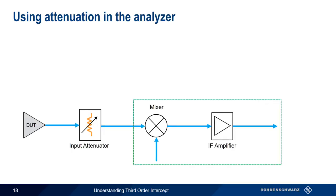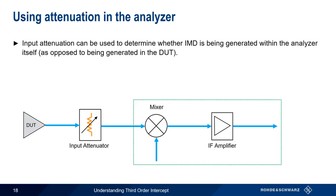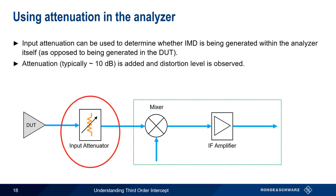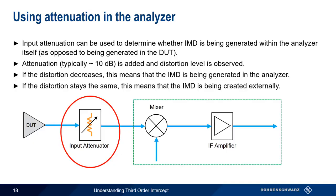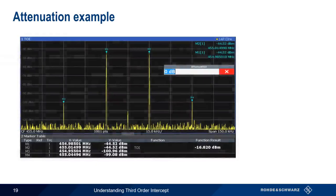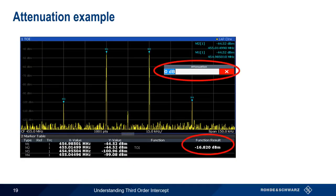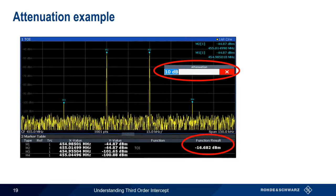On the analyzer side, we want to be sure that the intermodulation products we're measuring are not being created within the analyzer itself. Input attenuation is a simple and reliable way to determine where the IMD is occurring. The procedure is very straightforward: we add attenuation, usually about 10 dB, and observe the measured distortion level. If the distortion decreases after attenuation is added, the IMD is being generated within the analyzer. If the level of distortion does not change, the IMD is being generated externally. For example, with zero input attenuation, we calculate a third order intercept of minus 16.82 dBm. After adding 10 dB of input attenuation, our calculated third order intercept remains almost the same at minus 16.682 dBm. So it's safe to say in this instance that the measured IMD is not being generated within our analyzer.